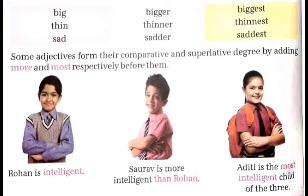Some adjectives form their comparative and superlative degree by adding 'more' and 'most' respectively before them. कुछ adjectives more और most को उनके पहले add करके comparative and superlative degree के form बनाते हैं. जैसे: Rohan is intelligent. Saurabh is more intelligent than Rohan. Aditi is the most intelligent child of the three.